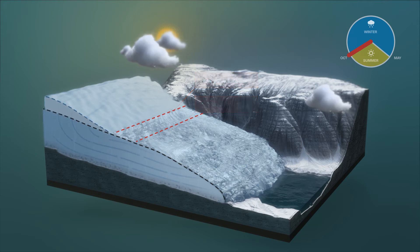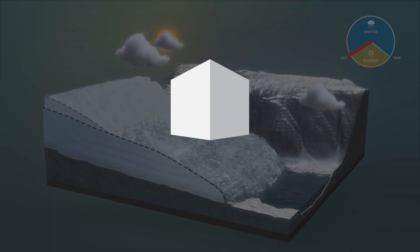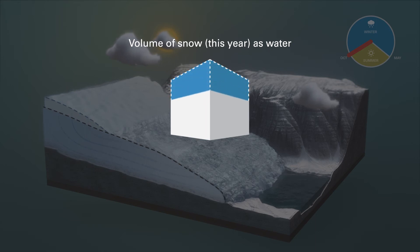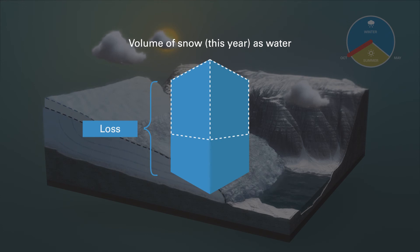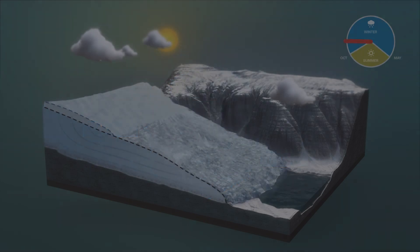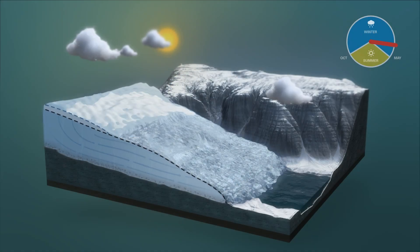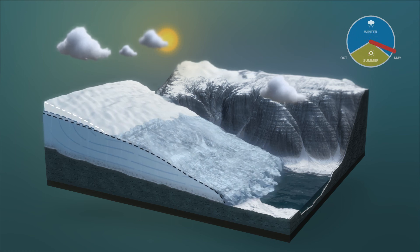Let's look at the assets. The volume of the total new snow this year was a large cube-shaped block, calculated as water. The volume of water lost from the glacier as a result of melting was a cube of this size. In comparison, it's evident there has been a large net loss of mass from the glacier. As a consequence, there is a deficit this year. If such a deficit occurs for a number of years in a row, the glacier becomes thinner and smaller, causing the whole glacier to recede.